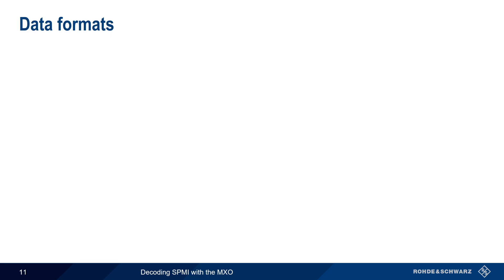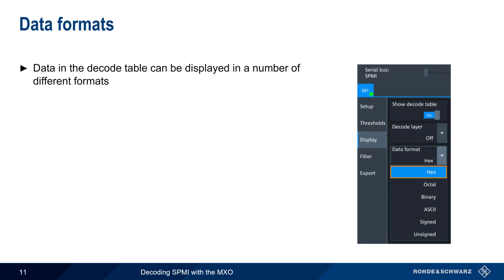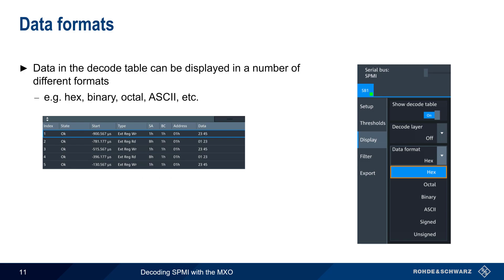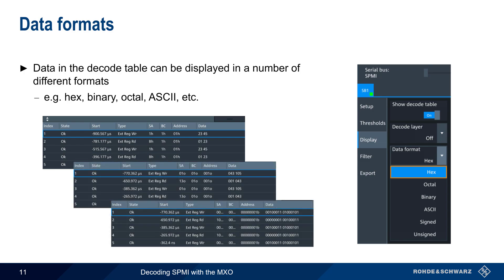Data in the MXO's decode table can be displayed in a variety of formats, including hexadecimal, octal, binary, ASCII, etc. The format can be changed both during and after decoding.